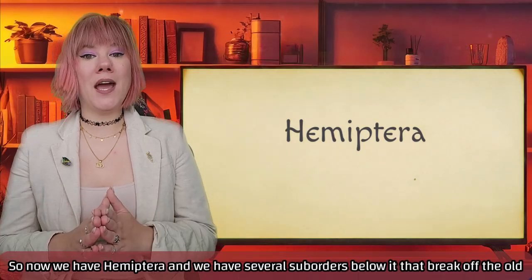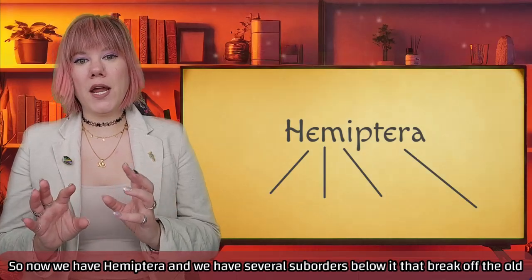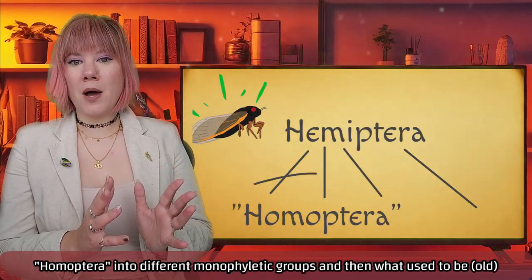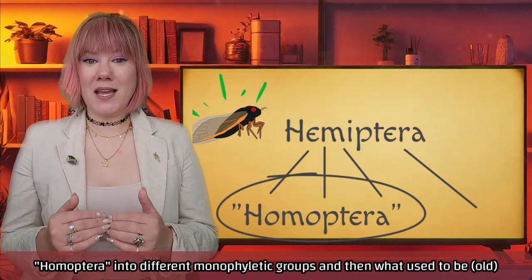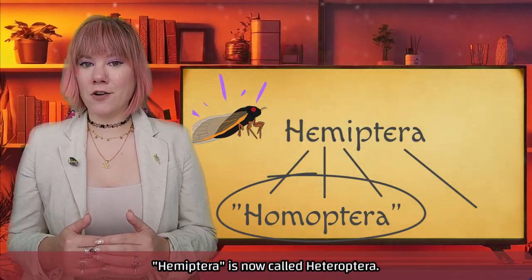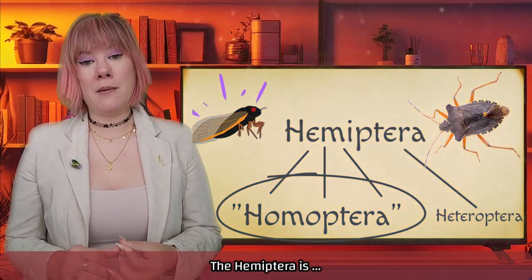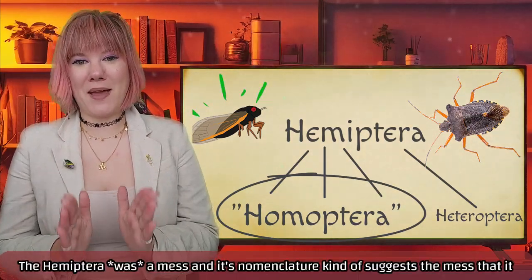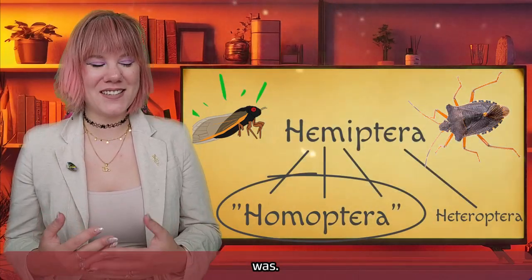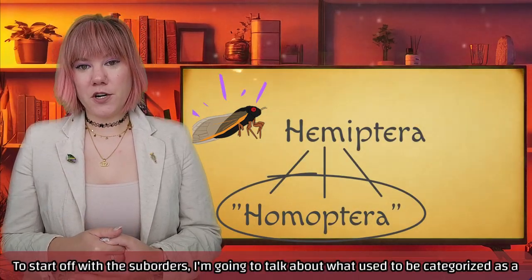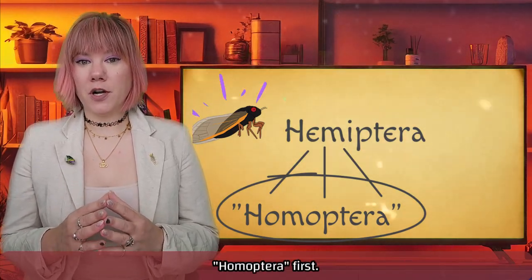So now we have Hemiptera with several sub-orders below it that break the old Homoptera into different monophyletic groups, and what used to be Hemiptera is now called Heteroptera. The Hemiptera was a mess, and its nomenclature kind of suggests the mess that it was.